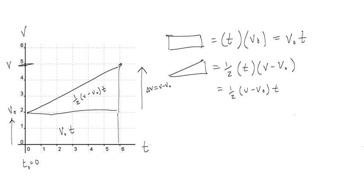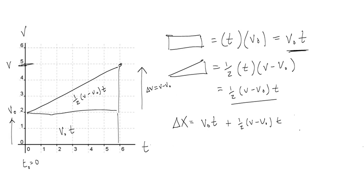That area also tells us displacement, because we're interested in positive or negative direction. So we write the equation: delta X equals v-naught T plus one-half (V minus v-naught) T. From this relationship, we're going to get two motion equations.